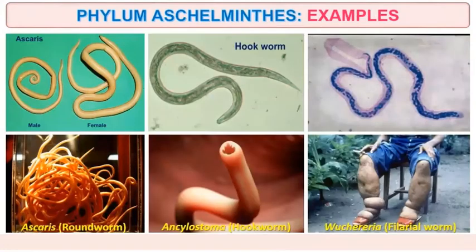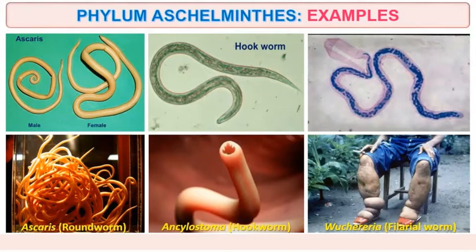Here are a few examples: Ascaris, roundworms, hookworms. Then Wuchereria — the filarial worm which is responsible for elephantiasis (elephant foot). Ascaris also acts as a parasite that lives inside the human intestine.